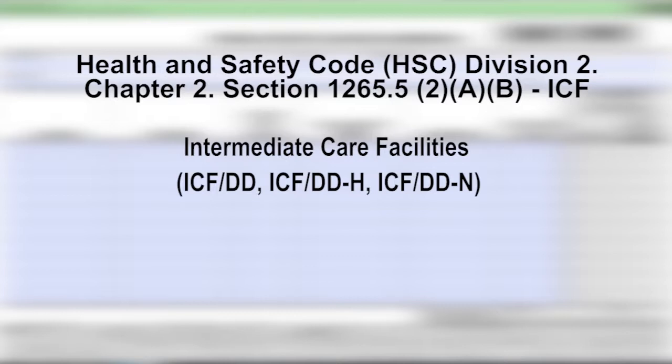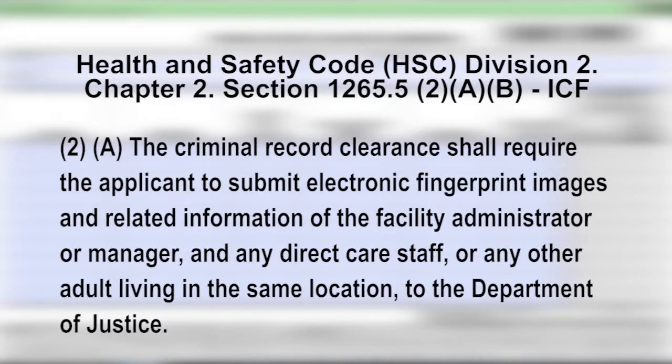The California Health and Safety Code, Division 2, Chapter 2, Section 1265.5 AB requirements for licensed intermediate care facilities — specifically ICF/DD, ICF/DD-H, and ICF/DD-N — states that the criminal record clearance shall require the applicant to submit electronic fingerprint images and related information of the facility administrator or manager, and any direct care staff or any other adult living in the same location to the Department of Justice.